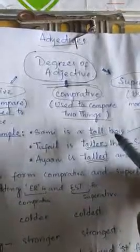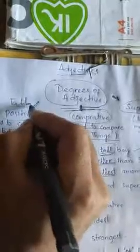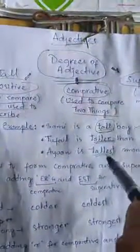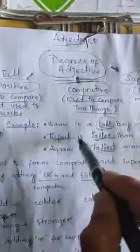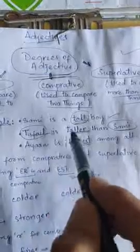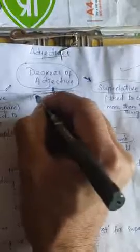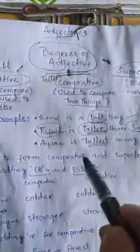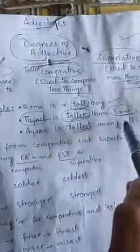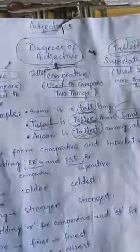To describe a person, we use the adjective 'tall,' which is the positive degree. To compare two persons — Tufail and Sami — when we make a comparison between two persons or two things, we use the comparative degree of an adjective, which is 'taller.' In the third example, Ayan is tallest among all, we have used the superlative degree — 'tallest' — which is used to compare more than two things.